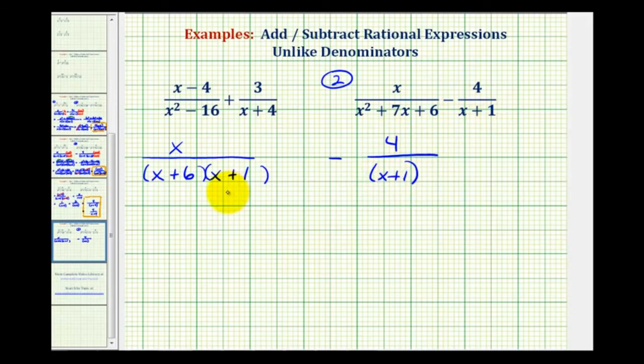Now remember our goal here is to determine a common denominator. Notice how this denominator here does not contain the factor x plus six. So we can multiply the denominator by x plus six, as long as we do the same to the numerator. Remember x plus six over x plus six would be equal to one.